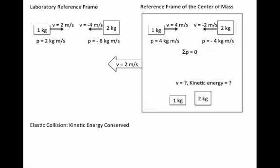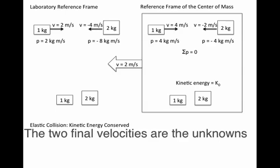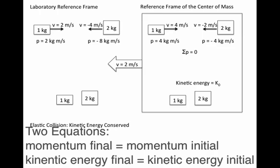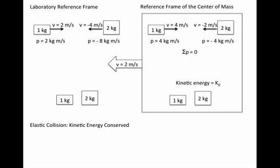What about an elastic collision? Now you have two different masses and don't know either of their final velocities. We've conserved kinetic energy, so we have two unknowns and two equations: conserve momentum and conserve kinetic energy (one half mv squared). You can solve the simultaneous equations — two pages of math in any textbook — but there's a more elegant way using the reference frame of the center of mass.